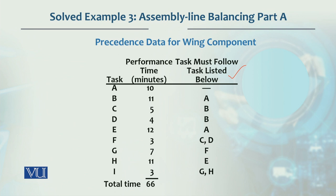When we make the diagram, we should first look at the last column — the precedence column. For example, there is a dash against task A. That means there is no task before A, so A is the first task to be performed.